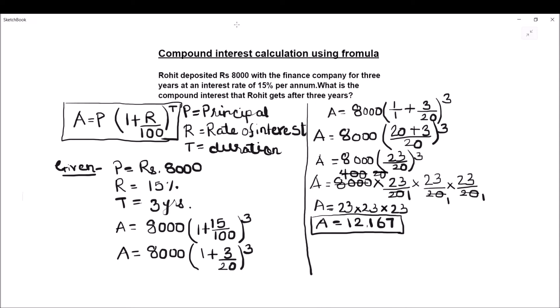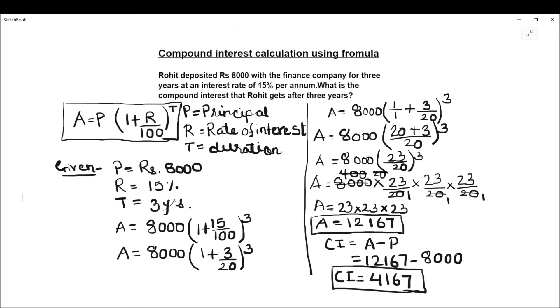So our amount is equal to 23 times 23 times 23, which equals 12,167. This is the amount Rohit will pay, which is more than the principal of 8000. Now we find compound interest: CI = amount minus principal = 12,167 minus 8000 = rupees 4,167. So this is the compound interest Rohit is going to pay after three years.